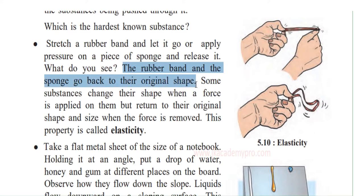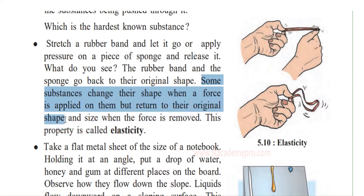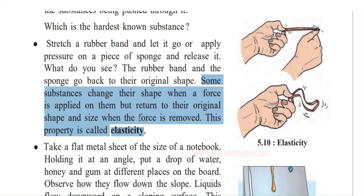So what do you see? The rubber band and the sponge go back to their original shape. If you stretch the rubber band it becomes longer, and when you release it, it comes back to its original shape. Some substances change their shape when a force is applied but return to their original shape and size when the force is removed. This property is called elasticity.